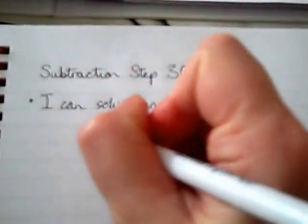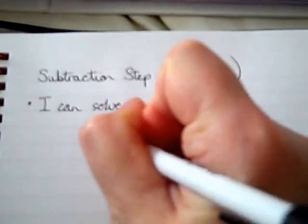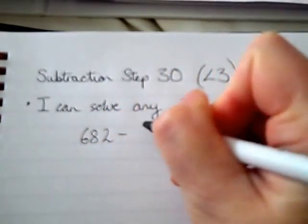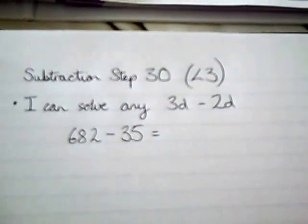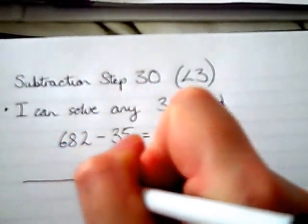First of all, we're going to do 682 take away 35. Things to remember. Show the gap on the number line.